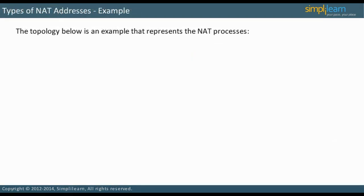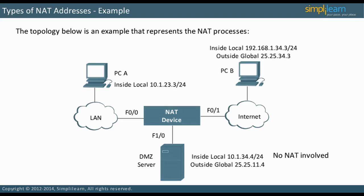In the topology example, there is a dividing line between inside devices — devices that are part of our local LAN — and outside devices. According to the topology, to reach the demilitarized zone (DMZ) server, NAT is applied to PCB's inside global address. It uses 25.25.34.3 to reach the DMZ server. PCA would use 10.1.34.4 to reach the server with no NAT involved. Between PCA and PCB, two NAT processes would be involved. Take some time to study the topology.